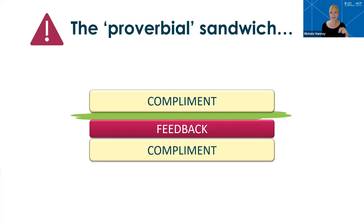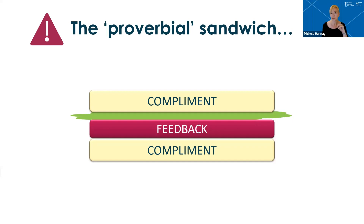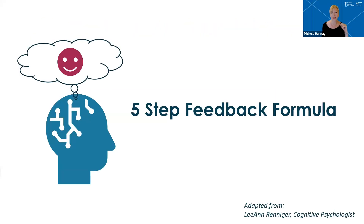Everyone has heard about the proverbial feedback sandwich, where you position feedback between two compliments. In theory this makes sense, but there are actually some issues with it. A lot of people know about it now and may find it manipulative or condescending. There's also a group of people who will only hear the compliments and completely miss the cleverly padded feedback. And another personality type will only hear the feedback and may think it's worse than it is because it was so heavily sugar-coated. So we may actually want to avoid this approach. Instead, we're going to look at a five-step formula for providing feedback that's designed to avoid triggering the amygdala in the recipient, because if it's going to be effective at all, the person has to be open to receiving it.